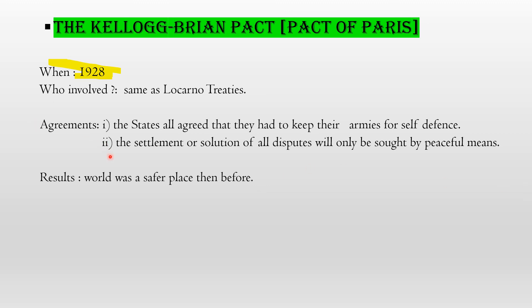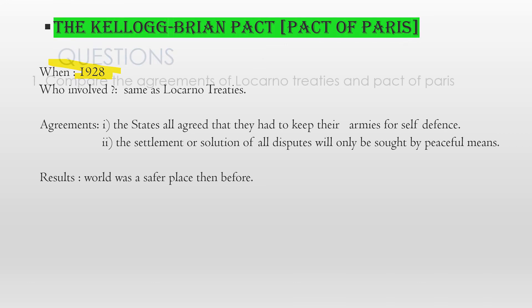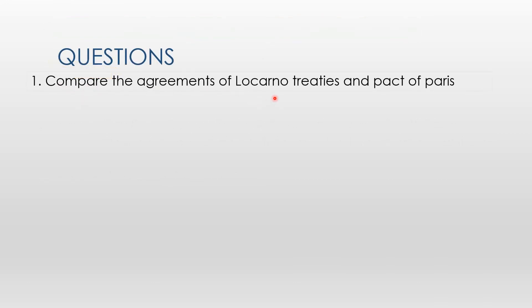So that's all for today. You need to remember the Kellogg-Briand Pact and the Locarno Treaties — what were the agreements in each. The key word for the Kellogg-Briand Pact is 'peaceful' — peaceful means no war. They will settle disputes by discussion.